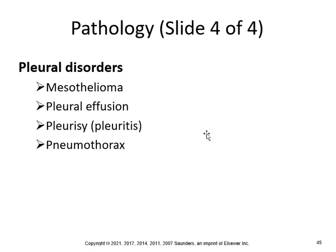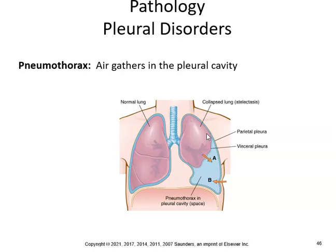Pleural disorders include mesothelioma, pleural effusion, pleurisy, pleuritis, and pneumothorax. Pneumothorax is where air gathers in the pleural cavity. You can also get hemopneumothorax, where there would be blood, from trauma.